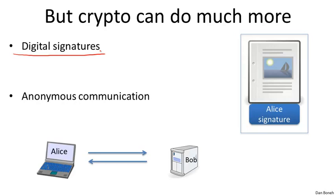We're going to talk about how to construct digital signatures in the second half of the course. The way digital signatures work is by making the digital signature a function of the content being signed. So an attacker who tries to copy a signature from one document to another won't succeed because the signature on the new document won't be the proper function of the data in the new document, and as a result the signature won't be verified. We'll see exactly how to construct digital signatures and prove those constructions are secure.